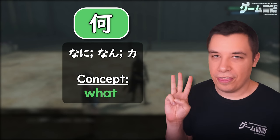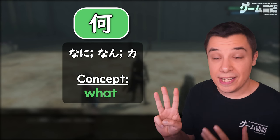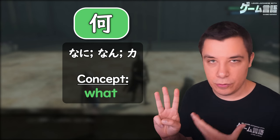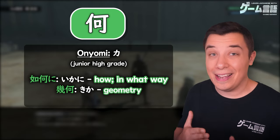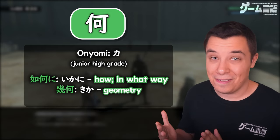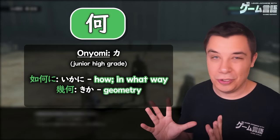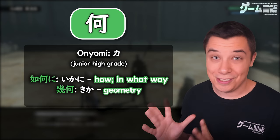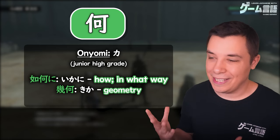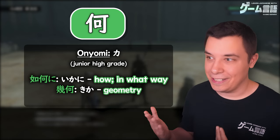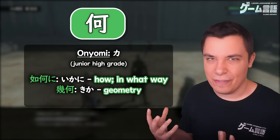The third reading is actually quite a high level reading. As we can see, this reading is taught at the junior high grade in Japan, so Japanese people don't learn this reading until that level. It is used in rarer words like Ikani, meaning 'how'.